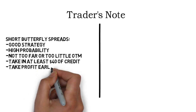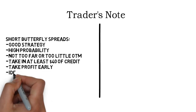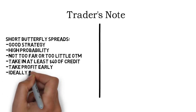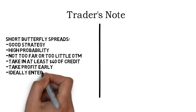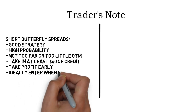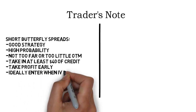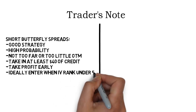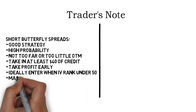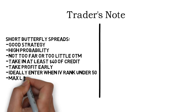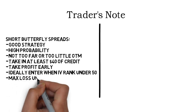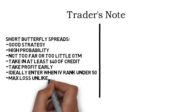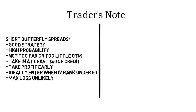It is often a good idea to take profit early instead of waiting and holding all the way to expiration, but don't take profit too early. Ideally you should enter this strategy in times of low IV, so use IV rank to your advantage. Finally, the probability of max loss is very low, and this makes this strategy even better.